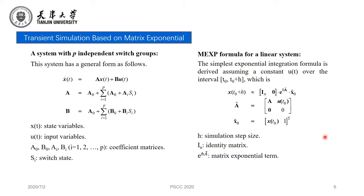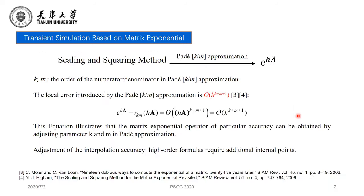For a linear system, assuming a constant U(t) over the interval T0 to T0 plus H, the simplest exponential integration formula is as follows. This formula is sufficiently accurate for a large portion of power system simulation studies and is especially attractive due to its high accuracy. This is the matrix exponential term. Efficiently solving this term is the key to practical application, and currently the best way is the scaling and squaring method, which mainly uses Padé function approximation, where K and M are the orders of the numerator and denominator of the Padé(K,M) approximation. The local error introduced by the Padé(K,M) approximation is of order K plus M plus one.